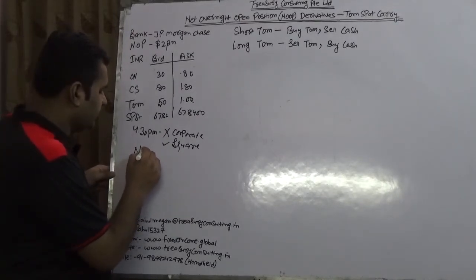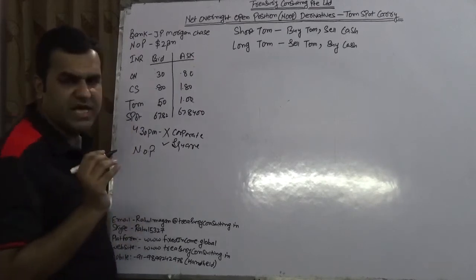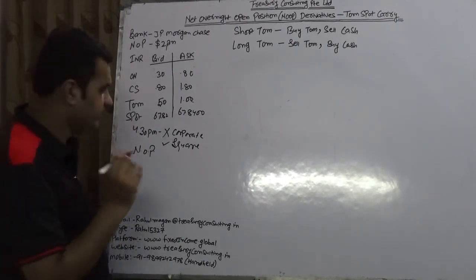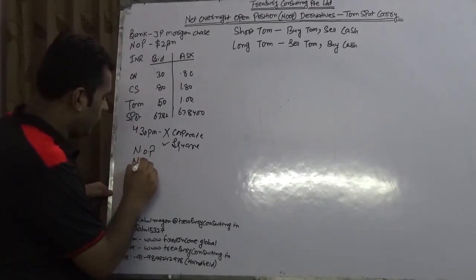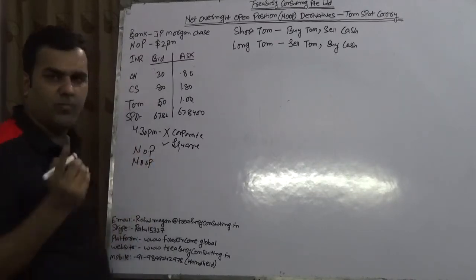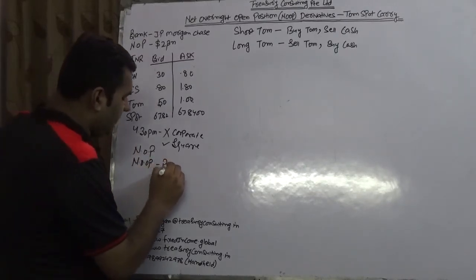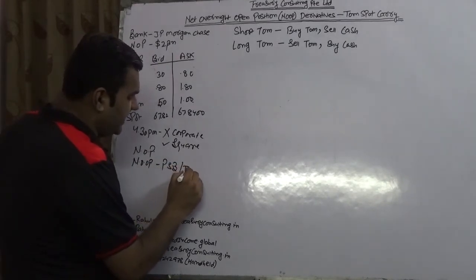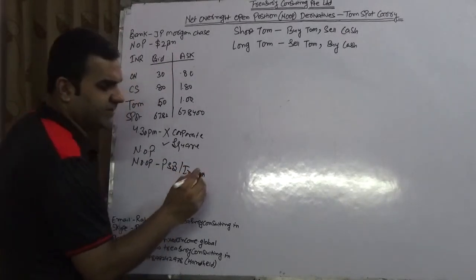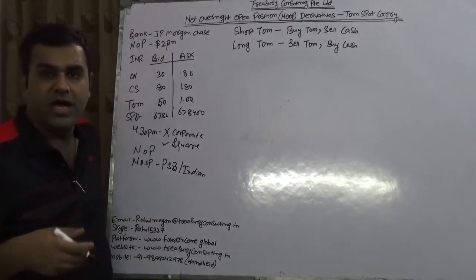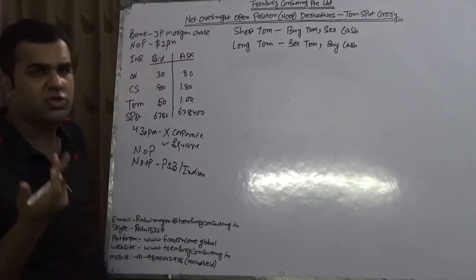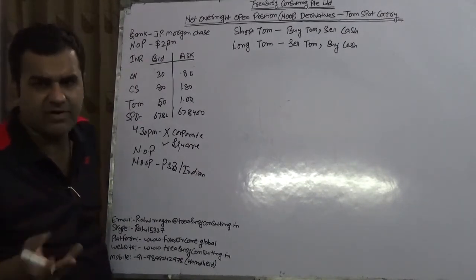There are 2 reports which are submitted to RBI. One is NOP Net Overnight Position and one is NOOP Net Overnight Open Position. This is for all the public sector banks or Indian banks, those who have foreign setup. Like SBI, like ICICI. Not sure about Yes Bank but they might have.